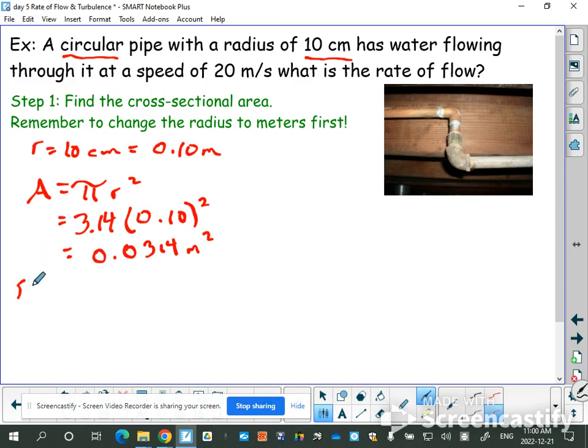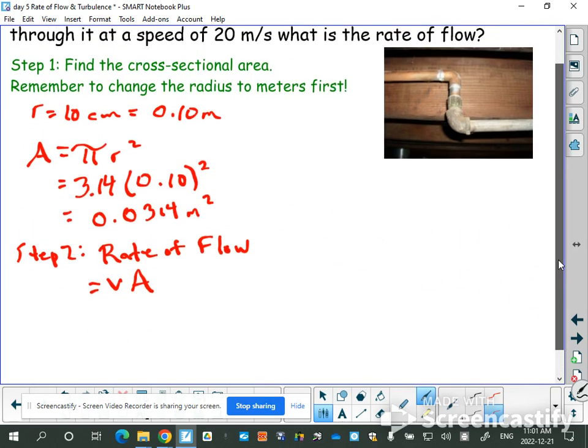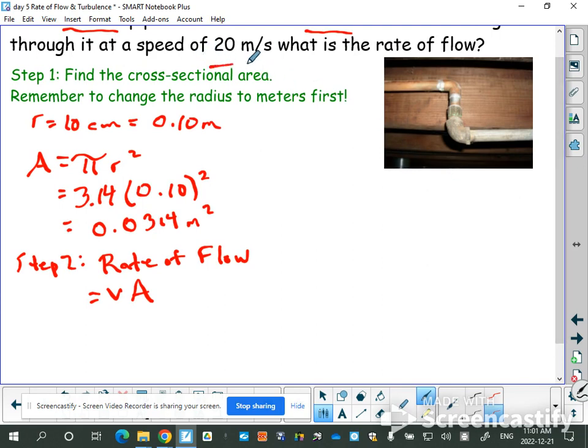So that's my first step. Step two, I'm going to find the rate of flow. And I have an equation that is quite straightforward. The rate of flow is equal to the velocity of the liquid times the cross-sectional area. Now, we already found the cross-sectional area, and it tells me in the question the velocity of the liquid as well.